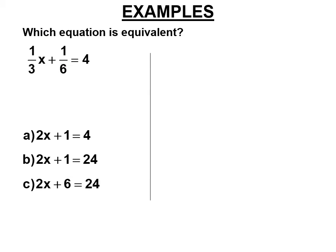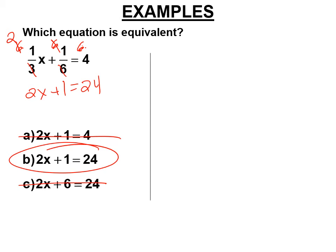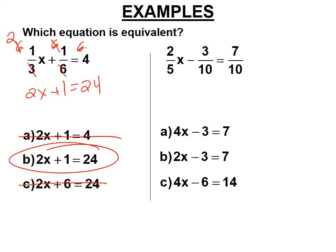We have to cancel a 3 and a 6, so we're going to multiply both sides by 6. The 3 cancels with the 6 and the 6 becomes a 2. These 6s cancel. We have 2 times x, which is 2x, plus 1 minus 3 equals 7. That's answer a.